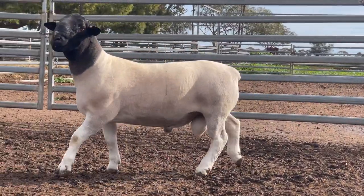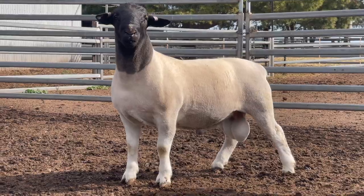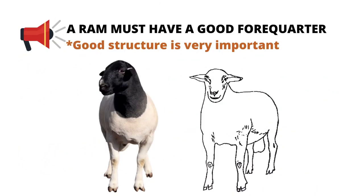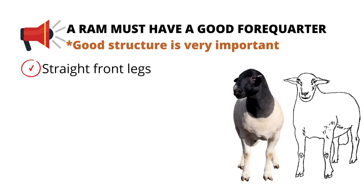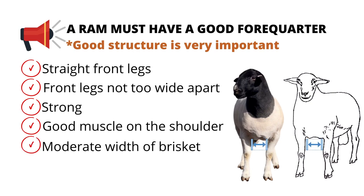Now we are going to the forequarter. Here structure is of the utmost importance as it will determine if the ram will have a long life and give you years of service or not. The shoulders are only coupled to the body by muscle and a membrane, so that is why structure is so important. Looking at the ram from the front, his front legs must be straight and not too wide, strong with good muscling on the shoulder. A good wide brisket is also desirable between the front legs, but we don't want the front end to be too wide, otherwise we have birthing problems in the lambs. Moderate width is very important.